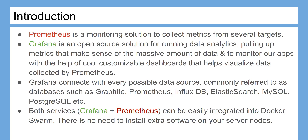Prometheus is a monitoring solution to collect metrics from several targets. Grafana is an open source solution for running data analytics, pulling up metrics that make sense of the massive amount of data and to monitor our apps with the help of cool customizable dashboards that help visualize data collected by Prometheus. Grafana connects with every possible data source, commonly referred to as databases, such as Graphite, Prometheus, InfluxDB, Elasticsearch, MySQL, PostgreSQL, etc.